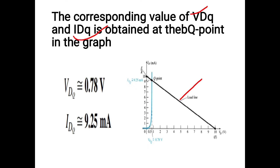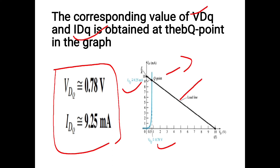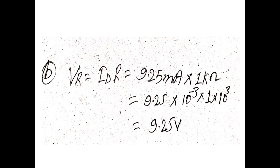This is the load line slope, drawn from the value of VD equal to 10 volts and ID equal to 10 milliampere. The point of intersection between the load line and the diode characteristic is known as the Q point or operating point, also known as the quiescent point. From the graph, the corresponding values at the Q point are: VDQ equals 0.78 volts and IDQ equals 9.2 milliampere.